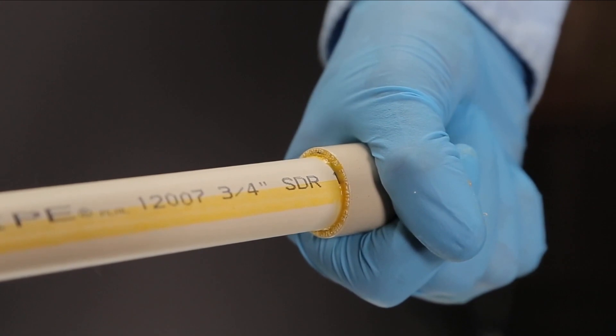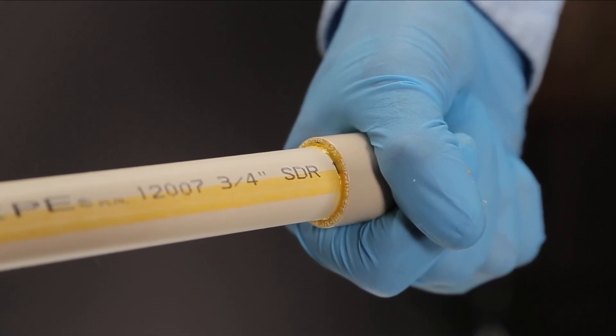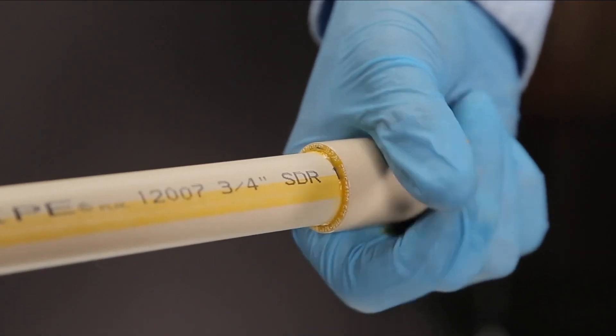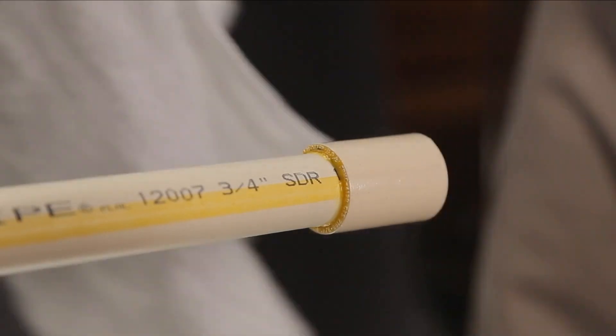Insert the pipe into the hub using a quarter turn as the pipe is being inserted. Don't try to adjust the fitting after the pipe hits socket bottom. Once it does bottom out, hold the pipe and the fitting together until the pipe doesn't back out.